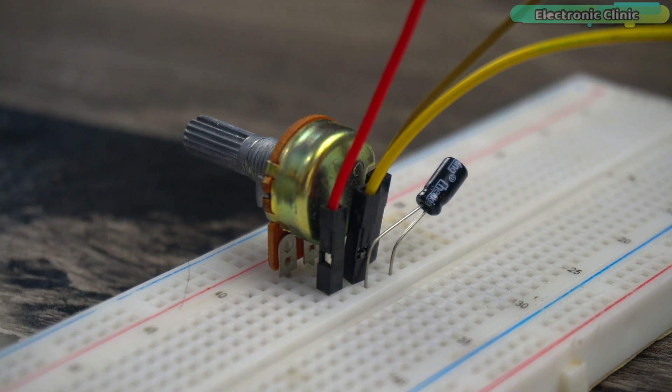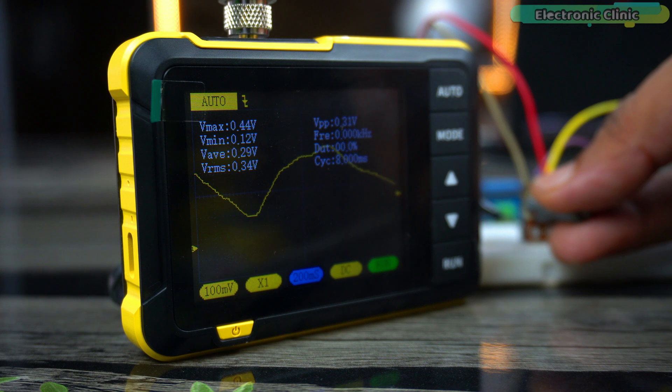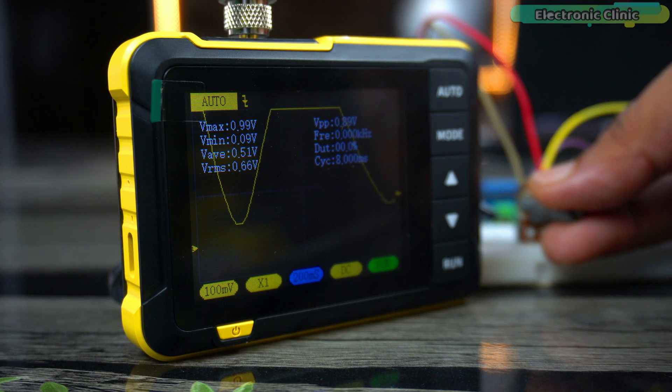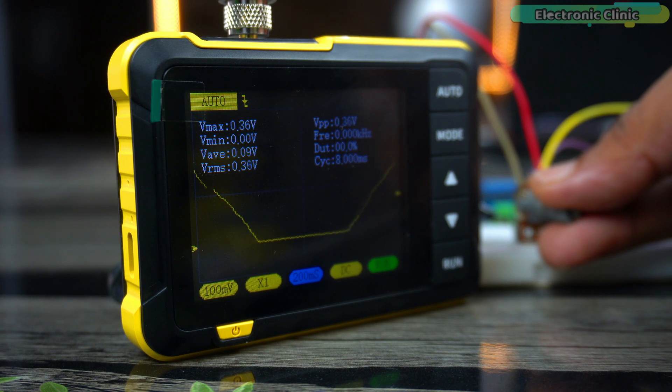Finally, we will introduce a hardware solution by adding a capacitor to create a low-pass RC filter. This physical filter will help smooth the analog signal before it even reaches the Arduino. This approach can be combined with the software filtering techniques for even better results.